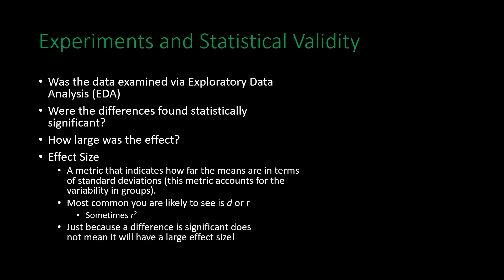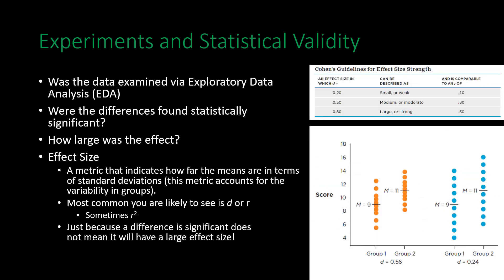It is important to note that just because a difference between two means is statistically significant does not mean it will have a large effect size. Cohen's generalized guidelines for effect size: a d of 0.2 is considered small or weak, 0.5 is considered medium or moderate, and 0.8 is considered large. For r (correlation coefficients), an r of 0.1 is small, 0.3 is medium or moderate, and 0.5 or greater is considered large or strong.